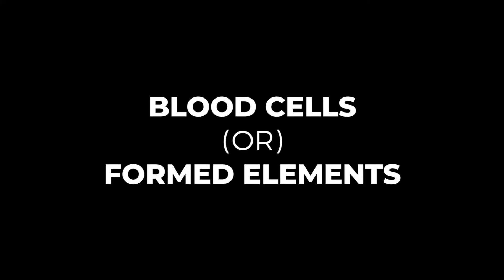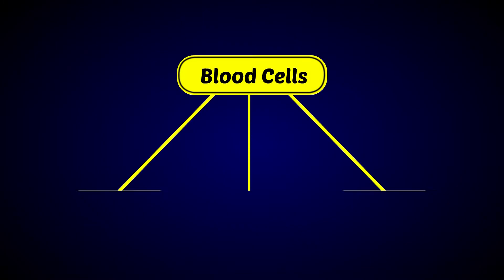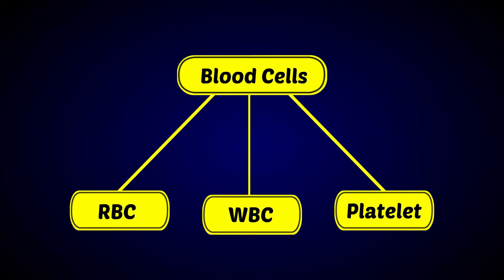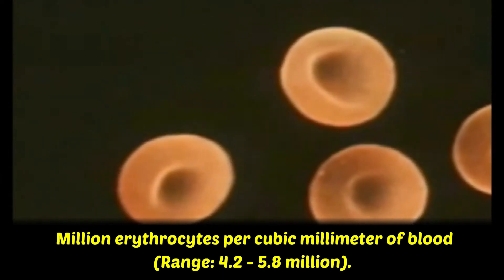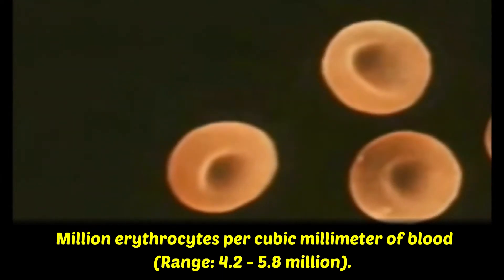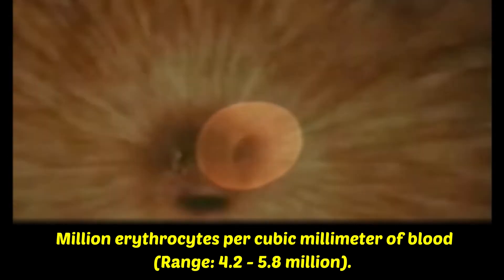Blood cells, or formed elements, are divided into red blood corpuscles, white blood corpuscles, and platelets. Red blood corpuscles, also called RBCs or erythrocytes, are circular, biconcave, and non-nucleated cells.